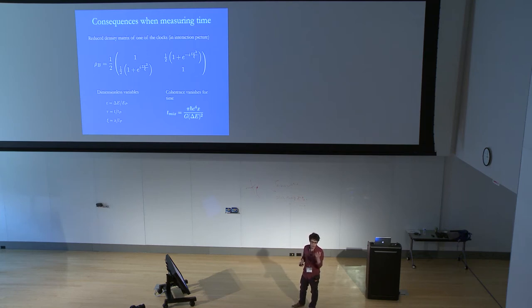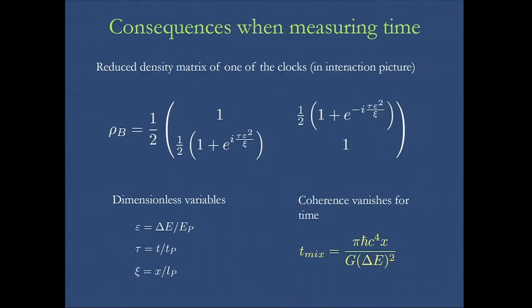So what happens when we want to forget about the surrounding clocks and measure the time in the clock we're interested in? We trace out the other clocks and we end up with a reduced density matrix for the clock we're interested in and this in general will be a mixed state due to the entanglement with the other clocks.